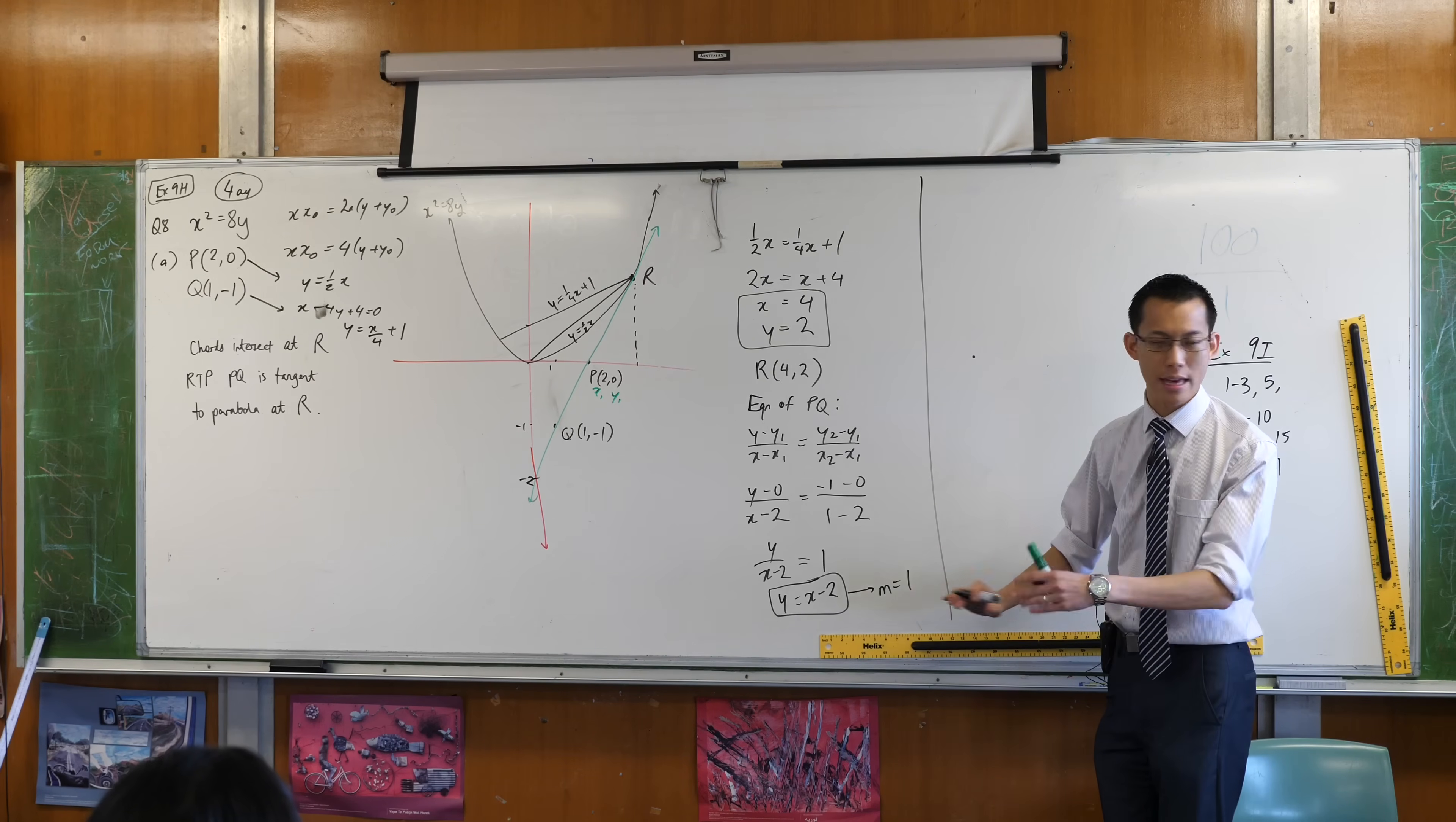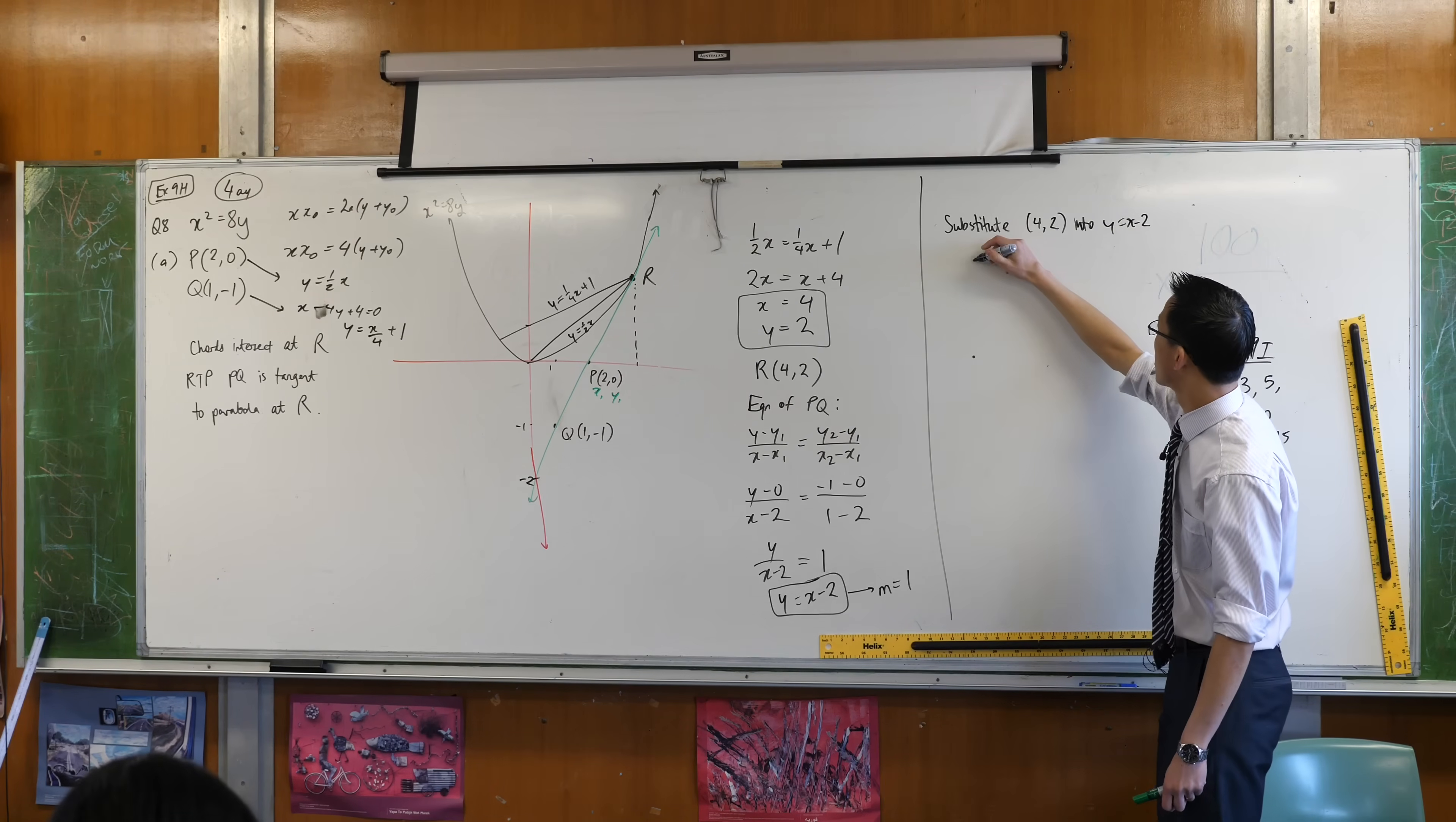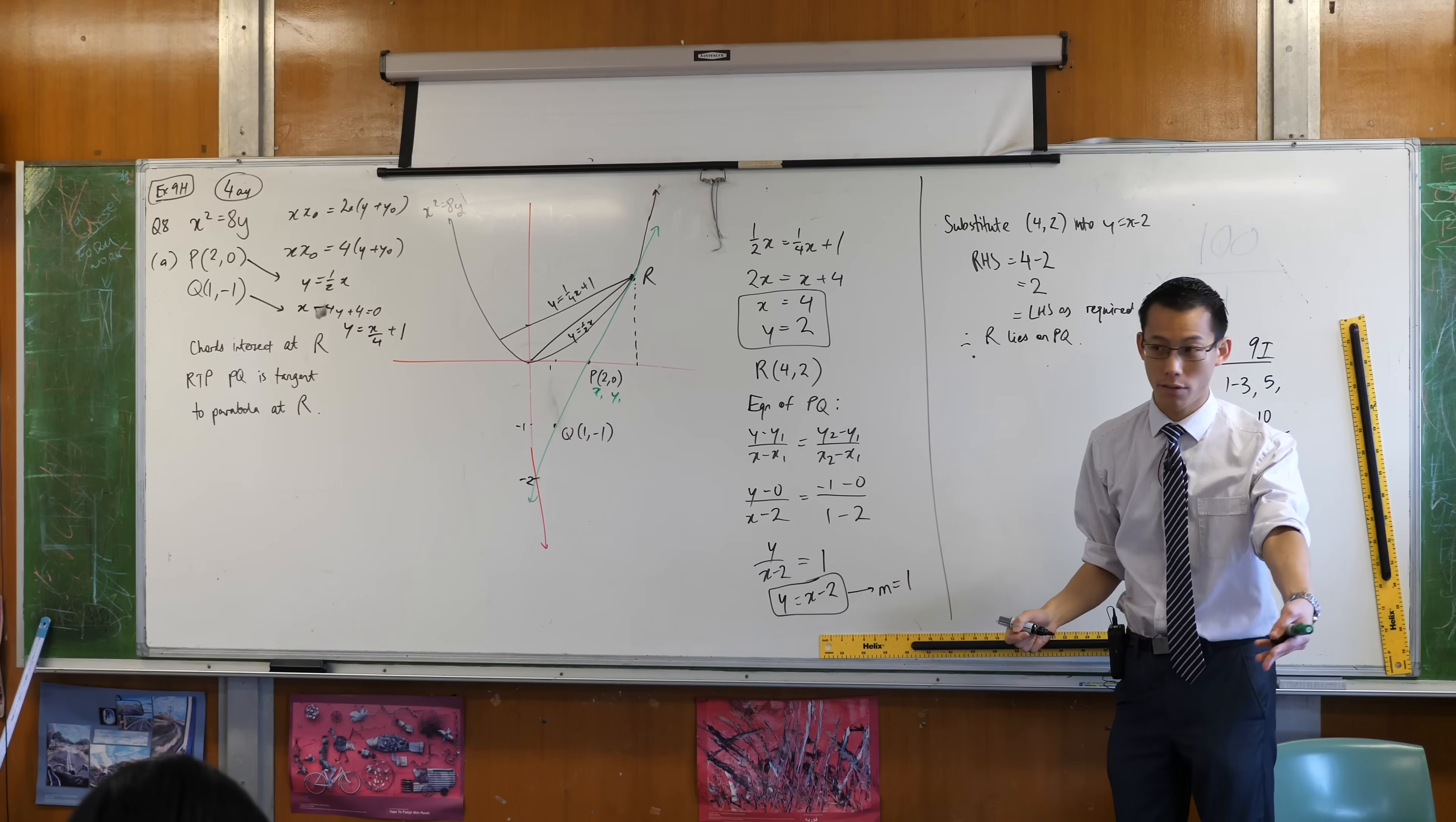I can prove that this goes through R without any calculus, so I'll do that first, it's very very easy. The coordinates of R are this, right? So if I substitute R into, how will I do this? 4 comma 2 into this, right? I'm going to do the right-hand side, equals 4 minus 2, yes? Which equals 2, which equals the left-hand side as required, because there's my y-coordinate. Okay, so therefore my conclusion from this little point is, therefore, R lies on PQ. That's not enough to make it a tangent, now I need to go for the gradient, okay?